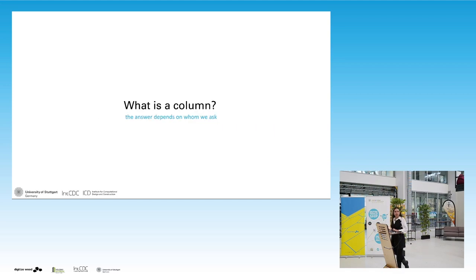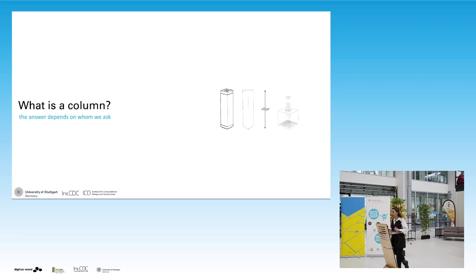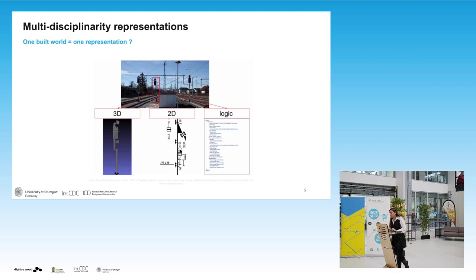I'd like to start with a question: what is a column? The answer probably depends on whom we ask. An architect might define a column as a volume, while a structural engineer can define it with two points, a line in between, and some other properties. Looking at an image of a railway, we see one physical asset, one infrastructure component, but three different representations: a geometrical representation, a 2D electrical engineering domain representation, and one showing the logic of how it works. So which one is right? All of them, because there are different ways to represent data.